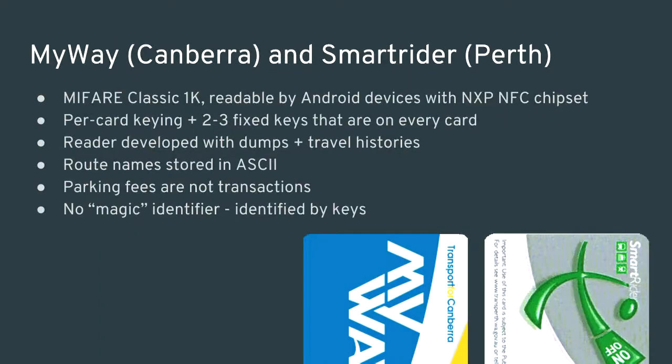Another card system I've looked at is the MyWay and SmartRider cards — slightly different implementations of essentially the same system, used in Canberra and Perth respectively. These also use MIFARE Classic cards, which are crackable. You need per-card keys to read them, but there's also a bunch of fixed keys on the card, so if you have one weak card you can get those fixed keys and then use them to crack stronger cards. The route names on the card are stored in ASCII, so no database is needed. In Perth, you can pay for parking fees at train stations with the card, but these parking fees are not recorded as transactions — they only decrement the balance, almost like a hack on the side.